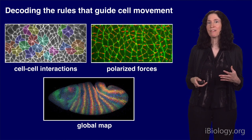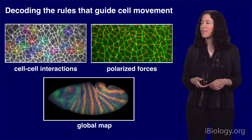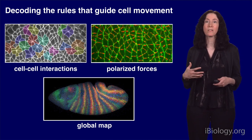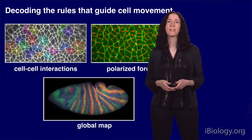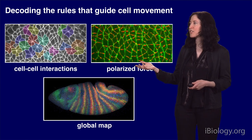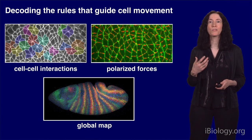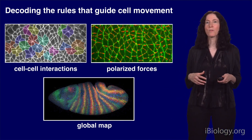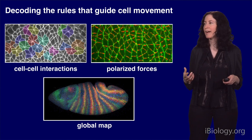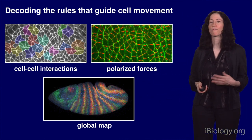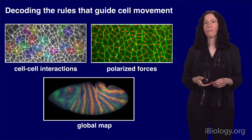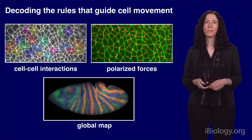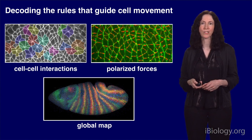In my lab we're interested in understanding how cells navigate as they move through the body during development. To get to the places where they need to end up, cells receive spatial information from many different sources. Cells can interact with other cells in their immediate environment. Cells generate forces in order to move and are exposed to the forces generated by cells around them. Each cell needs the equivalent of a compass that tells it where it is relative to a global map of the entire animal — shown here, a map of the Drosophila or fruit fly embryo. All three types of information are necessary to build the elaborate structures generated during development, as well as to enable regeneration and repair of these structures in adult animals.